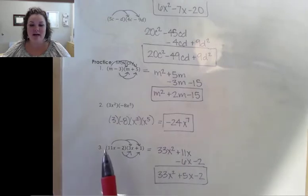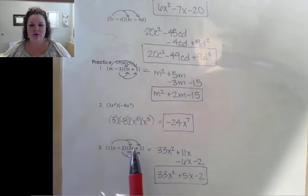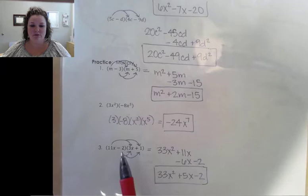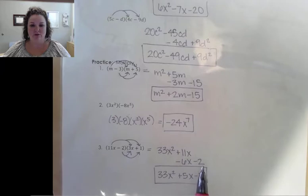And then on our third one, again, we're distributing. So we take our 11x and distribute it to everything in the second polynomial, which is going to give us 33x squared plus 11x. And then we need to distribute our negative 2. So negative 2 times 3x is negative 6x, and negative 2 times 1 gives me negative 2. When I combine my x terms, they combine to a positive 5x. So I end up with 33x squared plus 5x minus 2.